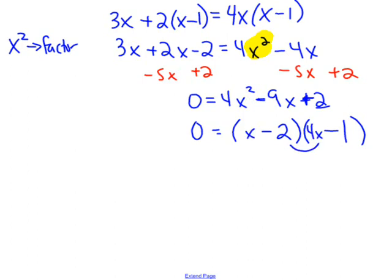So 4x and x, this gives me negative 8x and negative x, which gives me negative 9x in the middle. That's what I wanted.